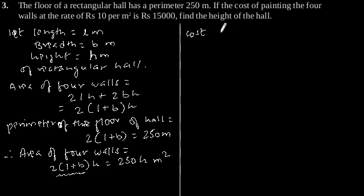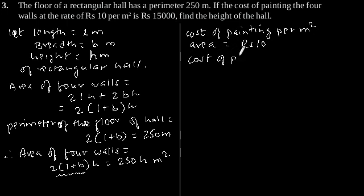Now cost of painting per meter square area is equal to Rs 10. So cost of painting 250H meter square area is equal to 250H into 10.